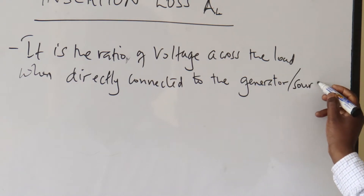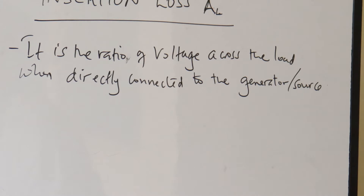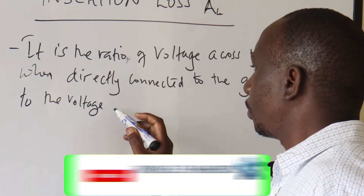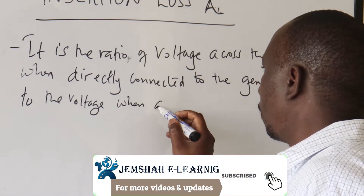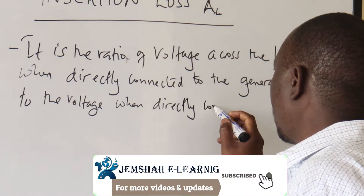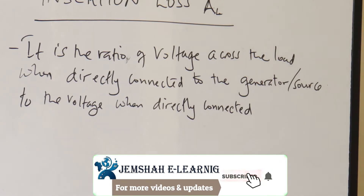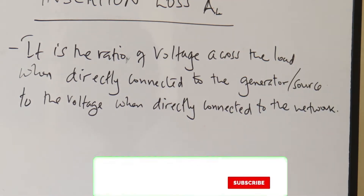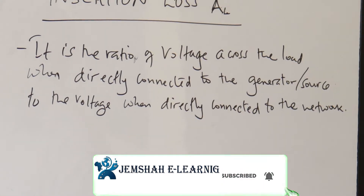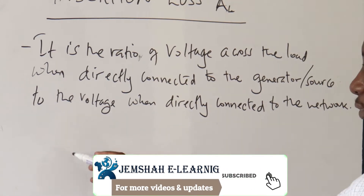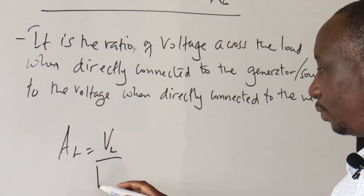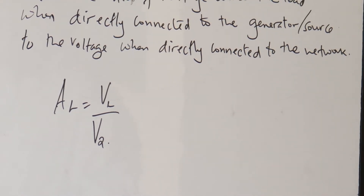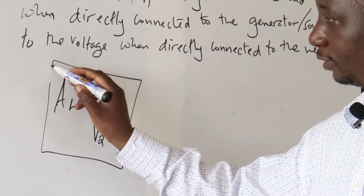The insertion loss is the ratio of the voltage when directly connected to the generator or source, to the voltage when connected to the network. Insertion loss is given by the voltage across the load and the voltage across the network, referred to as V2.